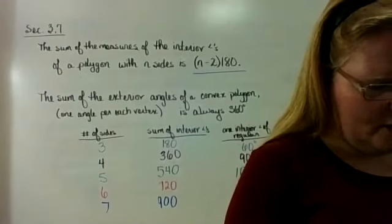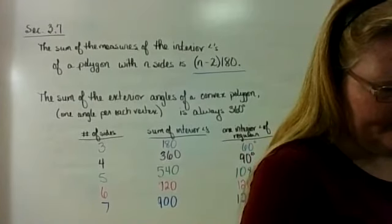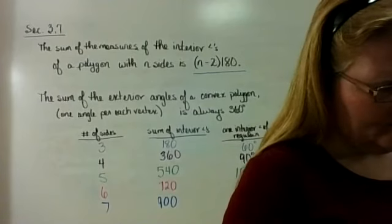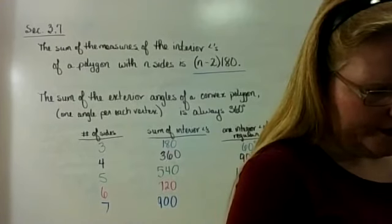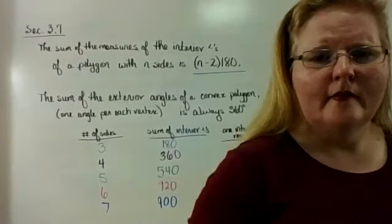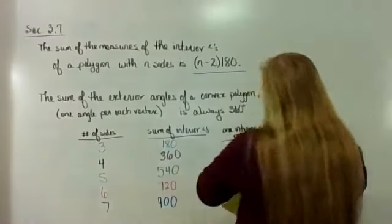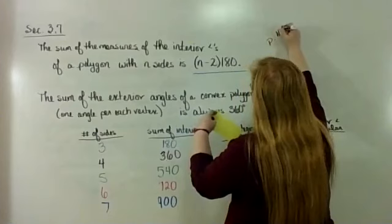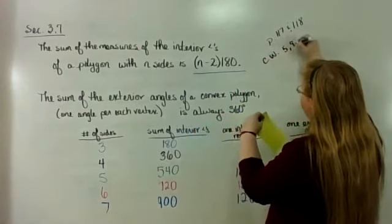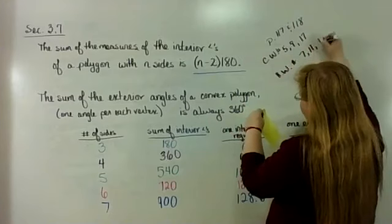So I'm looking on page 117 and 118. So I need you to do problems. This is what we're doing. Yeah, I know you can't read it. It's all right. I'm going to put it up here. So it's coming from page 117 and 118 because you like it when I tell you that. Practice exercises. The classwork is going to be 5, 9, and 17. And then the homework is going to be 7, 11, 19, and 31.